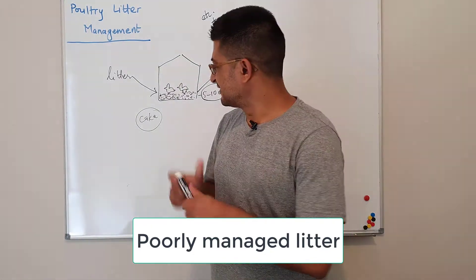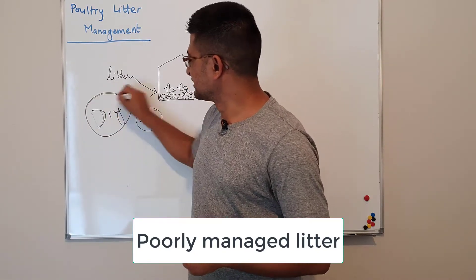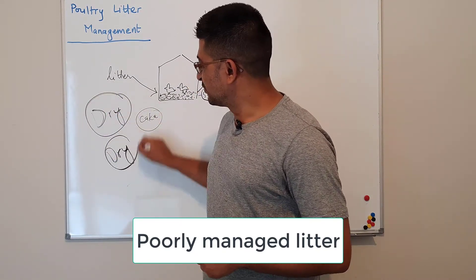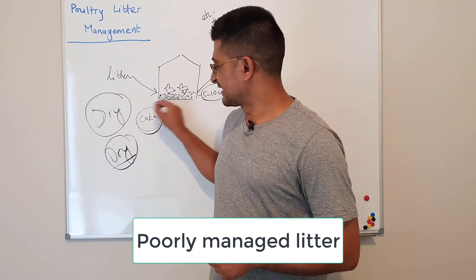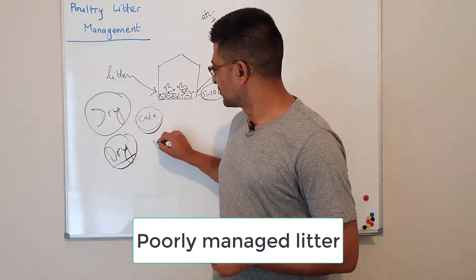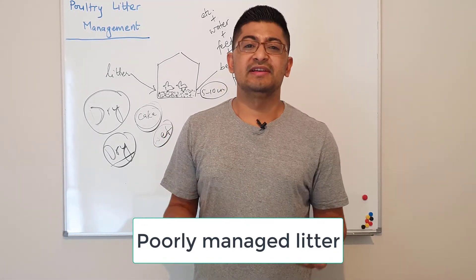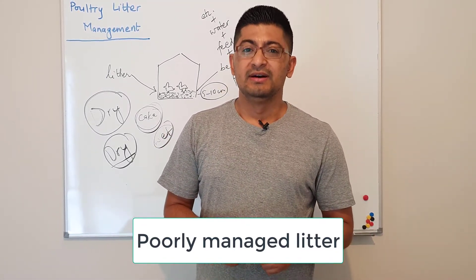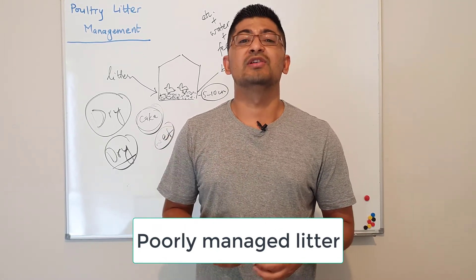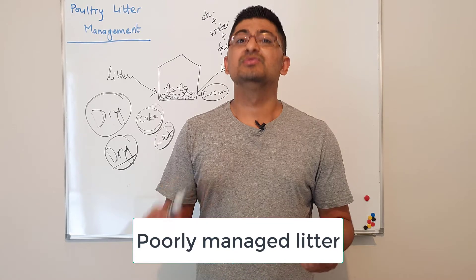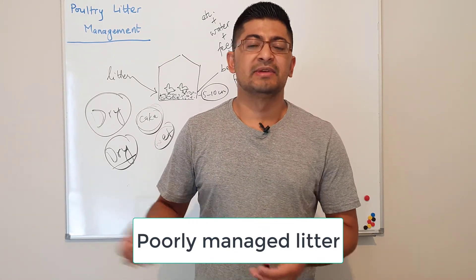So the idea is to make litter as dry as possible — this is the most important point. Properly managed litter is always dry, never caked, never wet. To make litter dry it is all about controlling the moisture, and to control moisture you need to work on drinkers and several other factors.